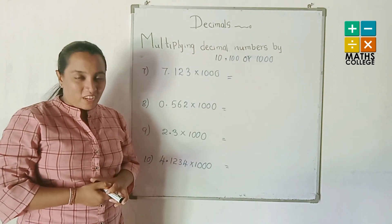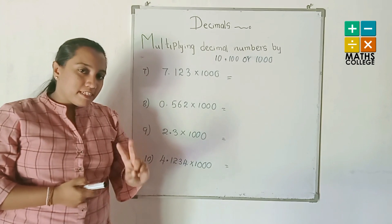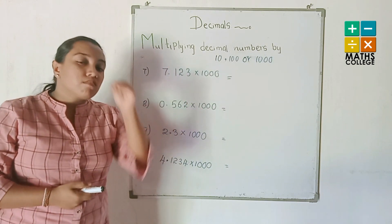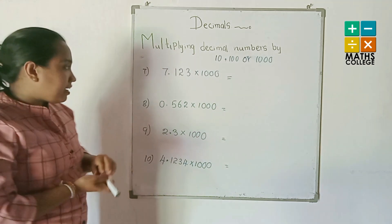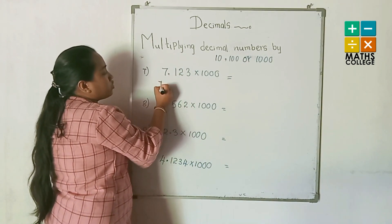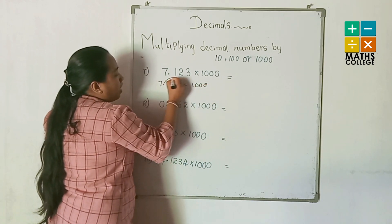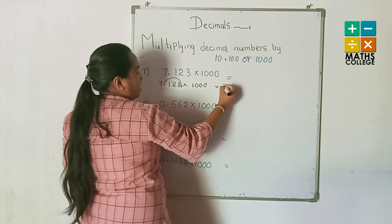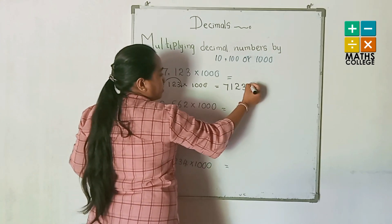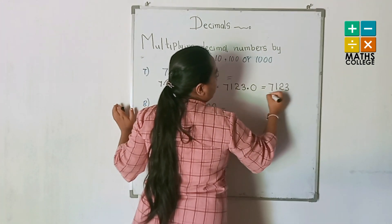Now let's discuss multiplying by 1000. One thousand has three zeros, so the decimal point jumps three places to the right. First example: a number multiplied by 1000 — the decimal point jumps one, two, three places. The answer is 7123.0 — no decimal numbers remain, so the final answer is seven thousand one hundred twenty-three.